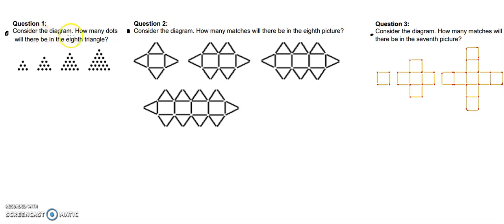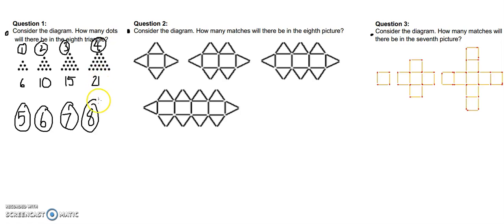This says, consider the diagram, how many dots will there be in the eighth triangle? How many triangles do we have at the moment? We've got one, two, three, four, so we still need to find five, six, seven, and eight. I'm sure you can agree it would take a long time to draw out all of those, so we're going to look for a mathematically faster way to do it. There are six dots in this first triangle, then there are ten dots, after that there are fifteen dots, and then twenty-one dots.